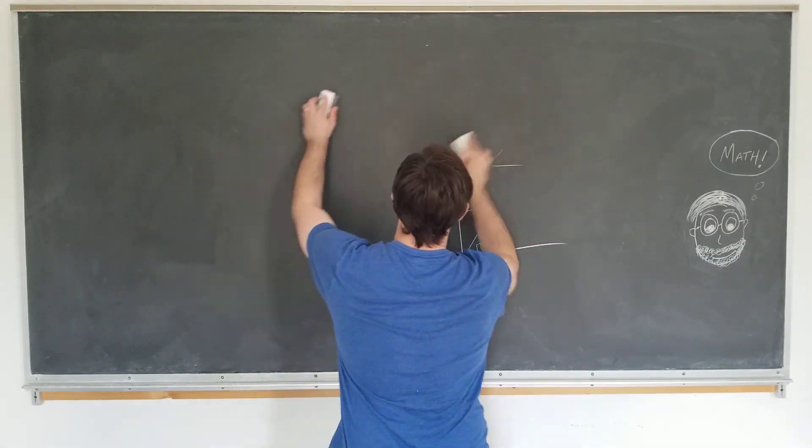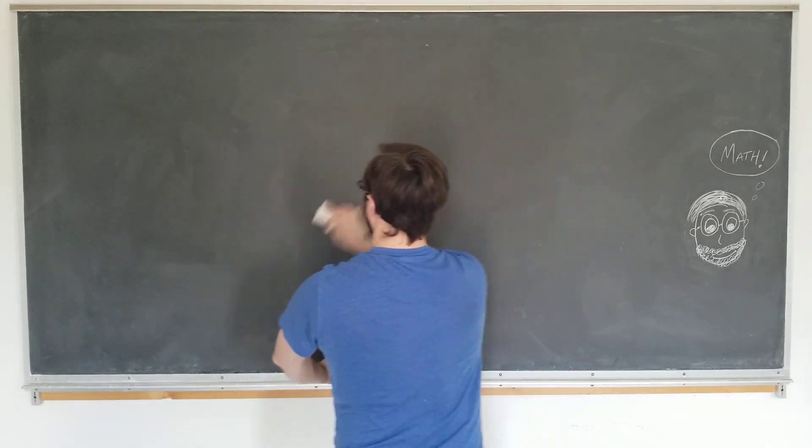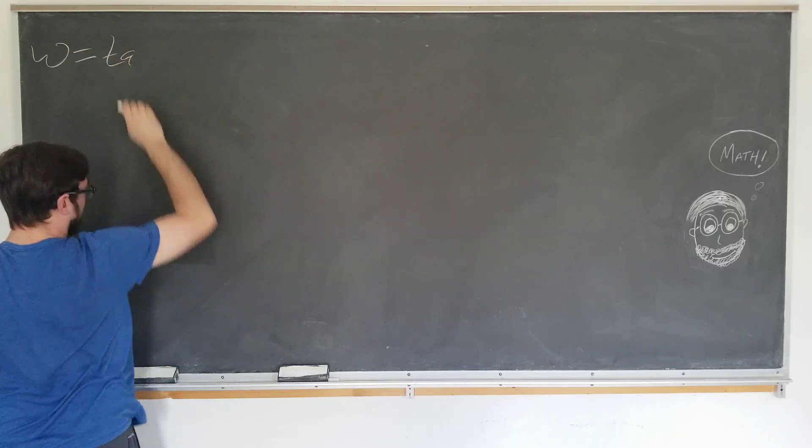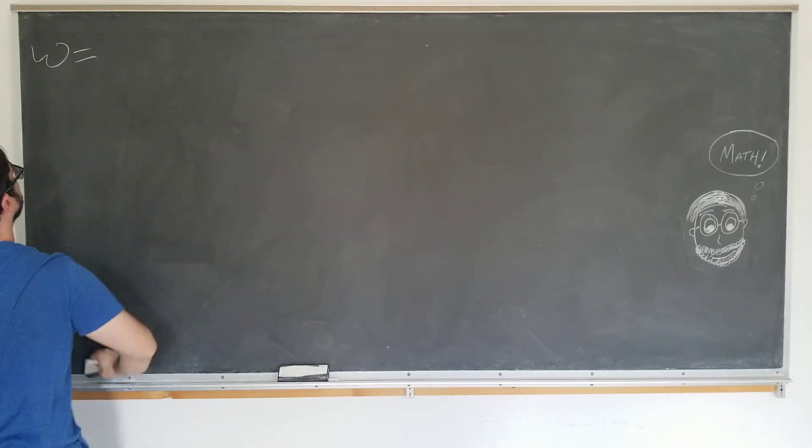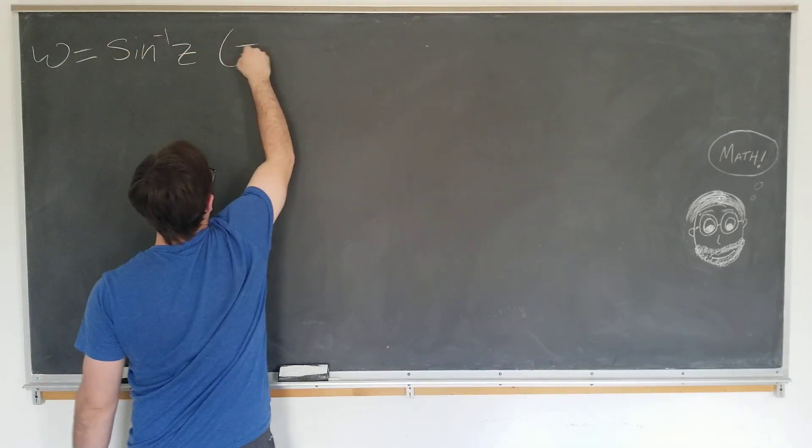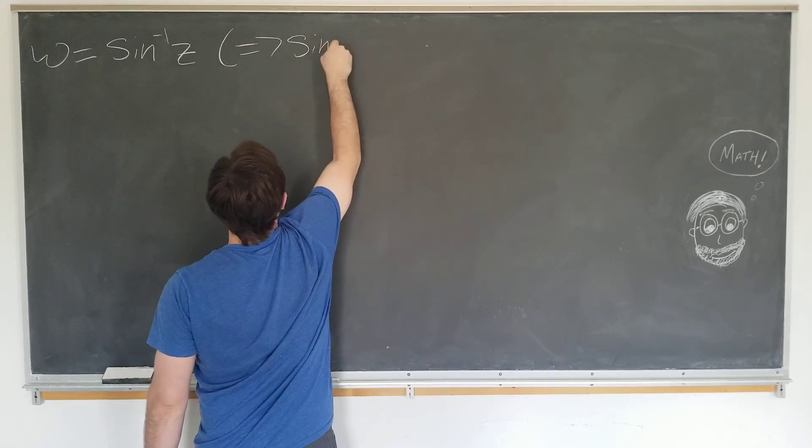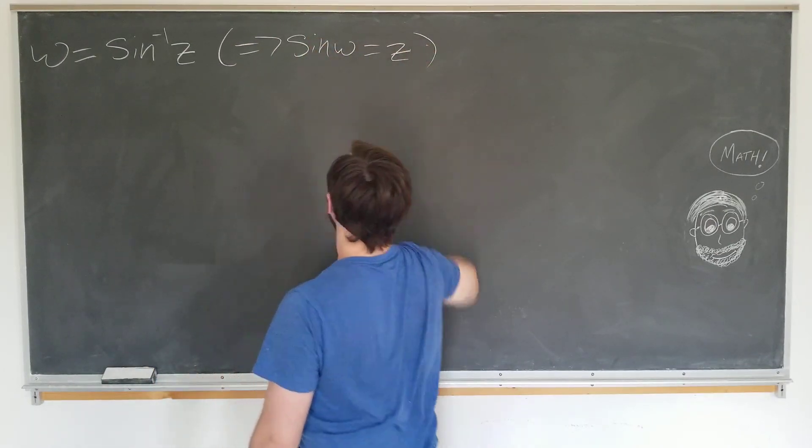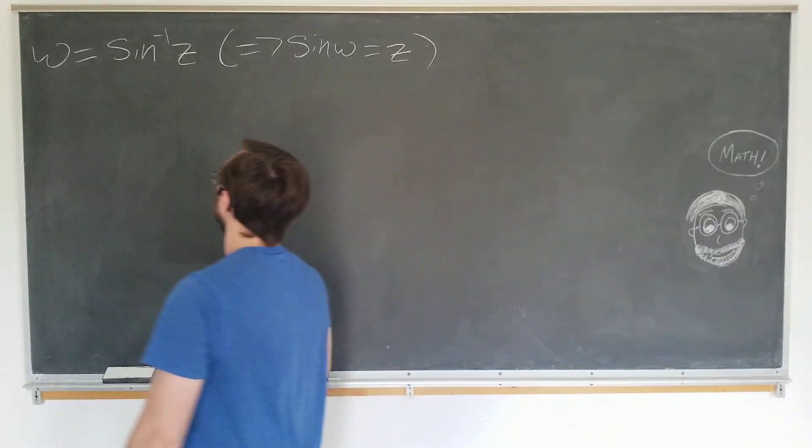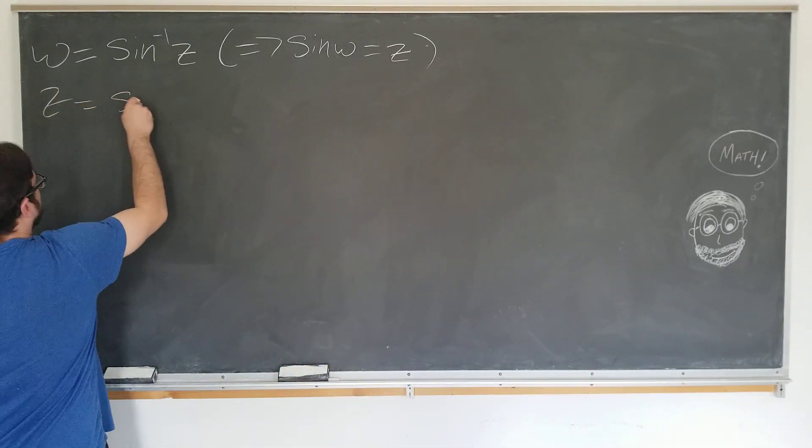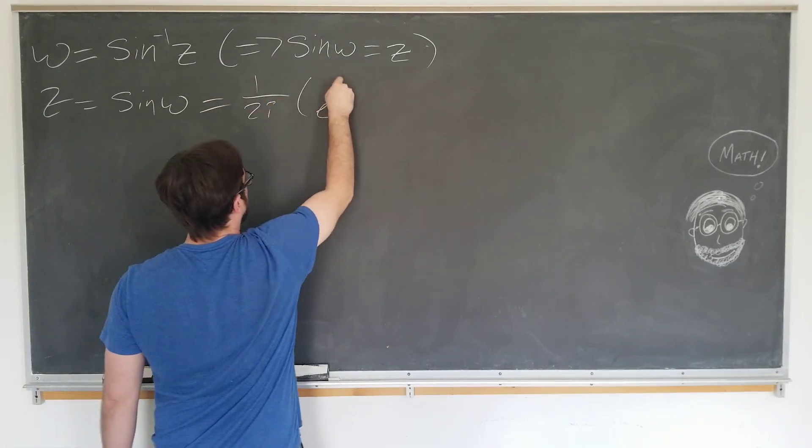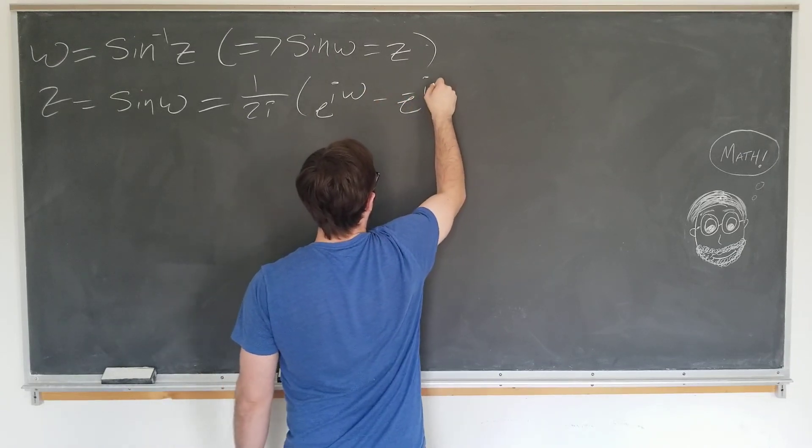Okay, let's continue. So we're going to consider the function w defined to be the inverse sine of some variable z, which of course tells us that sine w is equal to z. And we're just going to plug in the complex form of the sine to get a quadratic equation. So we know that z is equal to 1 over 2i times e to the iw minus e to the minus iw.